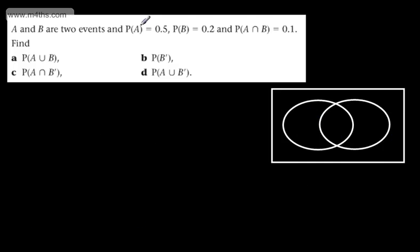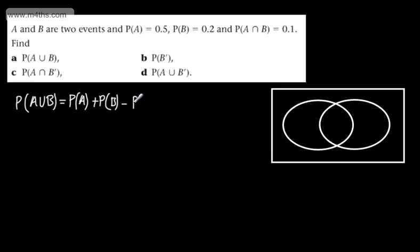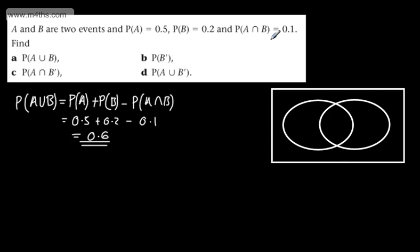Looking at the first question: A and B are two events where the probability of A is 0.5, probability of B is 0.2, and the probability of A intersection B is 0.1. To find the probability of A union B, we use the formula: P(A union B) equals P(A) plus P(B) minus P(A intersection B) — that's 0.5 plus 0.2 minus 0.1, which gives us 0.6.